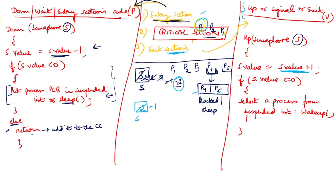Since the condition is true, a process is selected from the suspended list and woken up. Generally the process that arrived first in the blocked list is woken up first — so P4 comes out of the blocked queue and moves to the ready queue. Ready queue means P4 is ready for execution. Whenever the OS has time, it can take P4 and put it into the critical section.